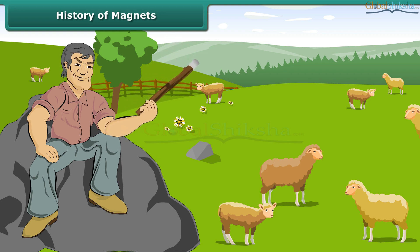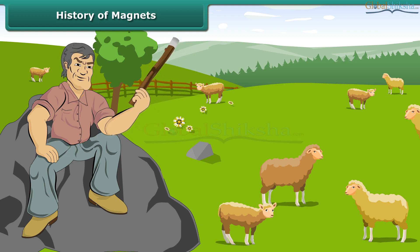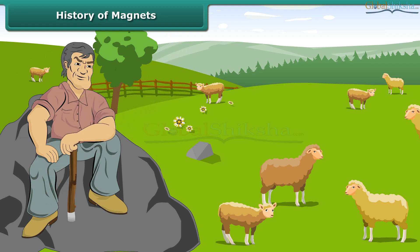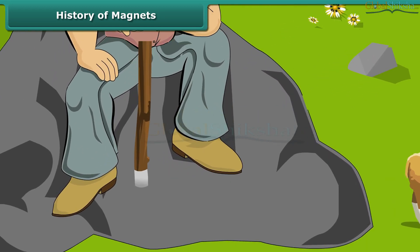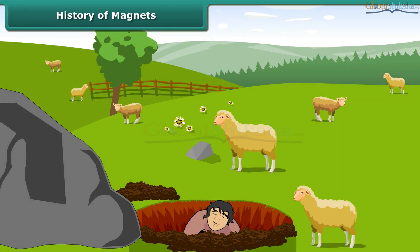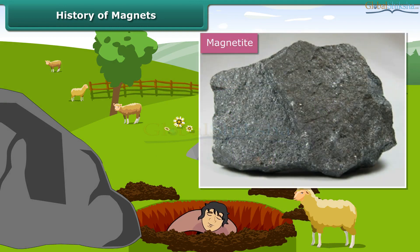There is a popular legend that leads us to the discovery of magnets, which involves an elderly Greek shepherd named Magnus. It says that Magnus was herding his sheep in an area of northern Greece called Magnesia, about 4,000 years ago. Suddenly the metal tip of his stick became firmly stuck to a large black rock. To find the source of attraction, he dug up the earth to find magnetite, a natural magnetic material.